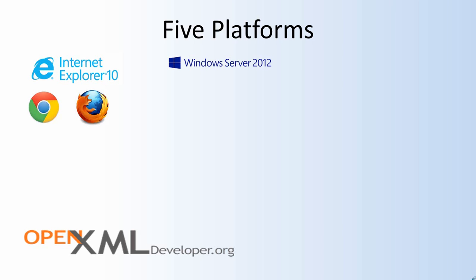The second platform, or a variety of platforms, are servers. You can write your OpenXML program using Node.js and run it on a server. You can run it on Windows Server, Linux, or Unix. It has great performance.